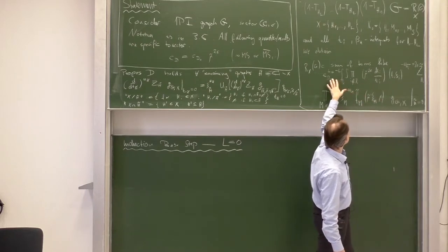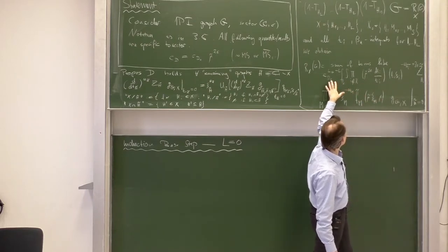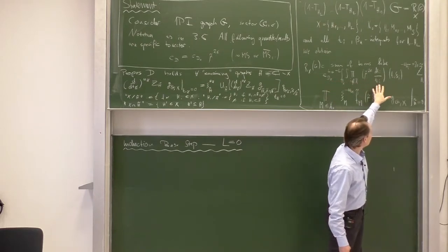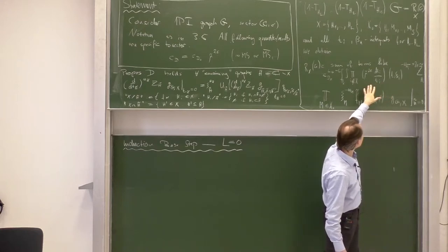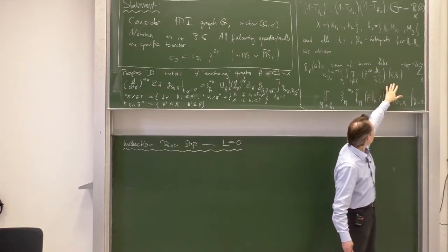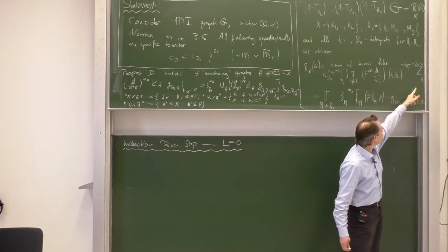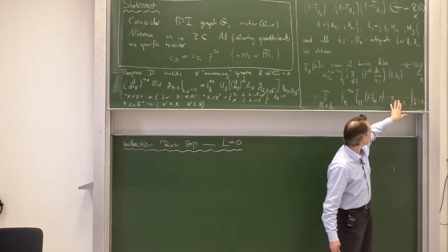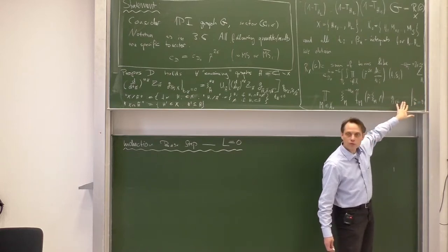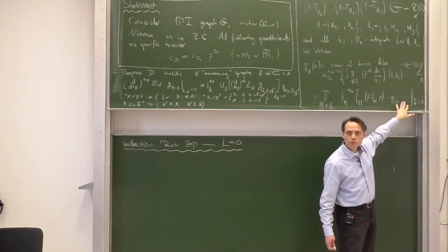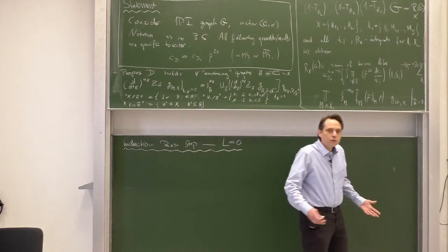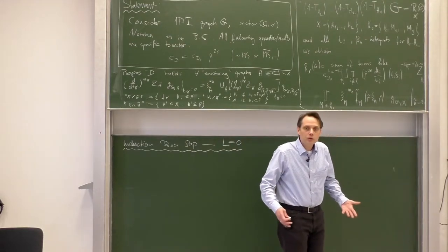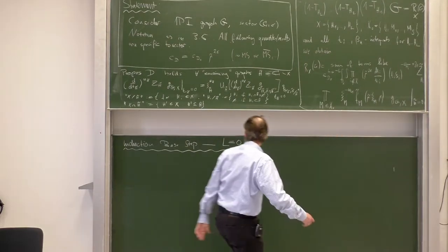We need to show that the integral has the form: loop factors times integrals over t's and betas, with an integration measure factor, numerator factors, and the C-infinity function which is analytic in epsilon. And that is exactly what we did in our Proposition C.